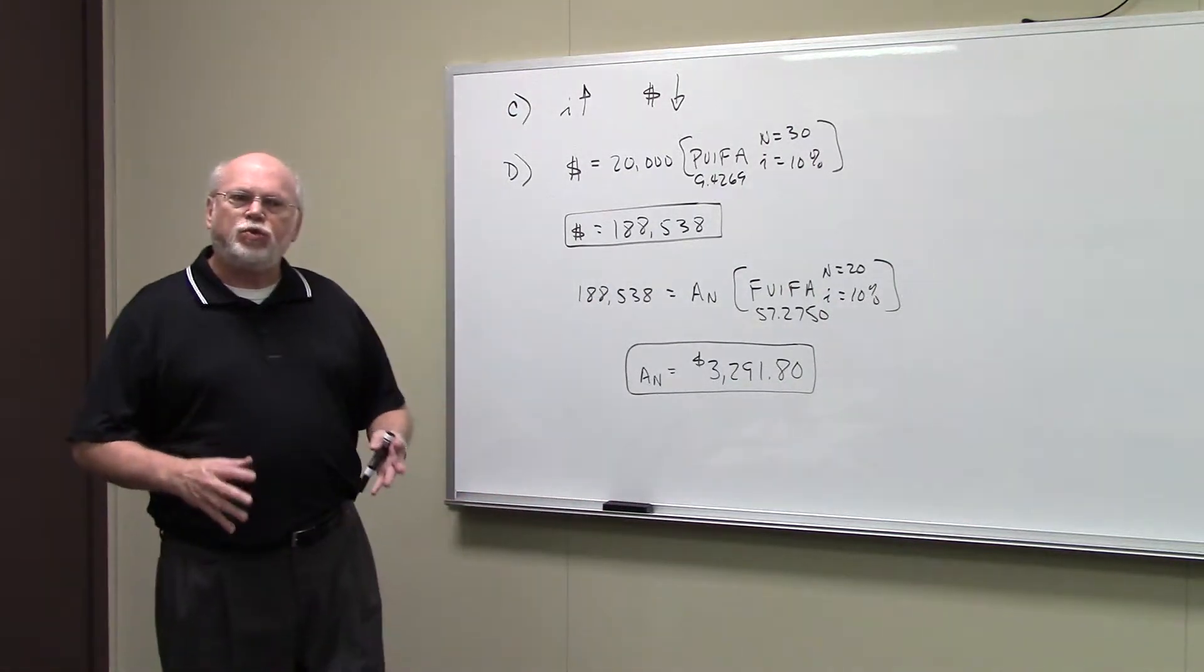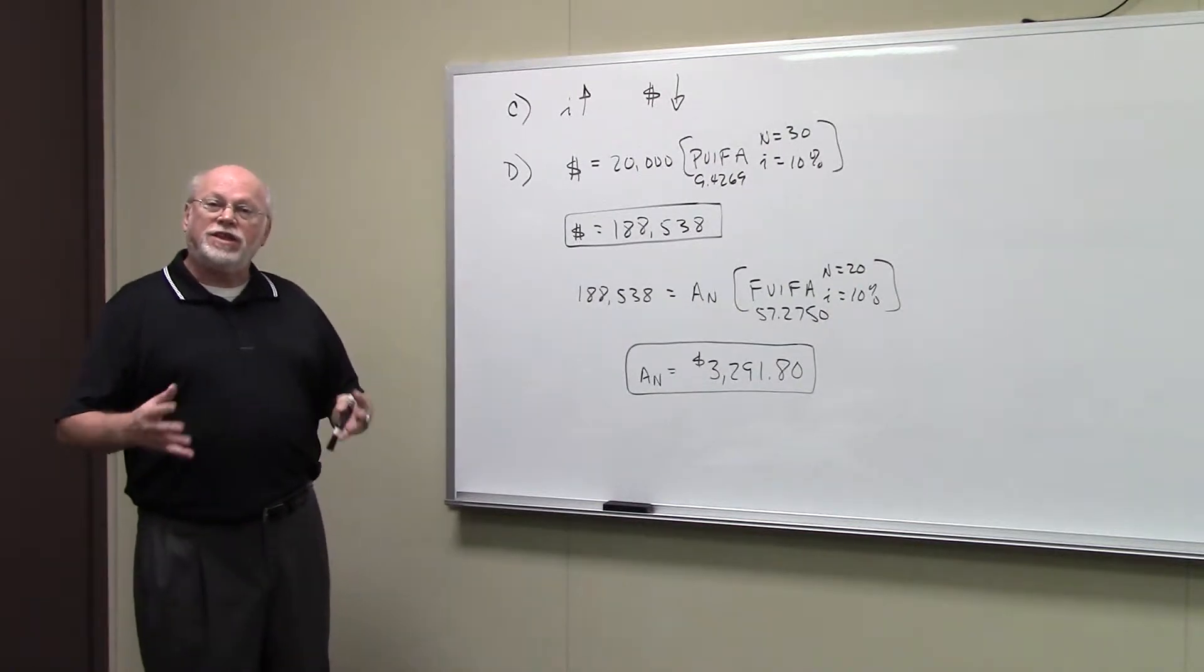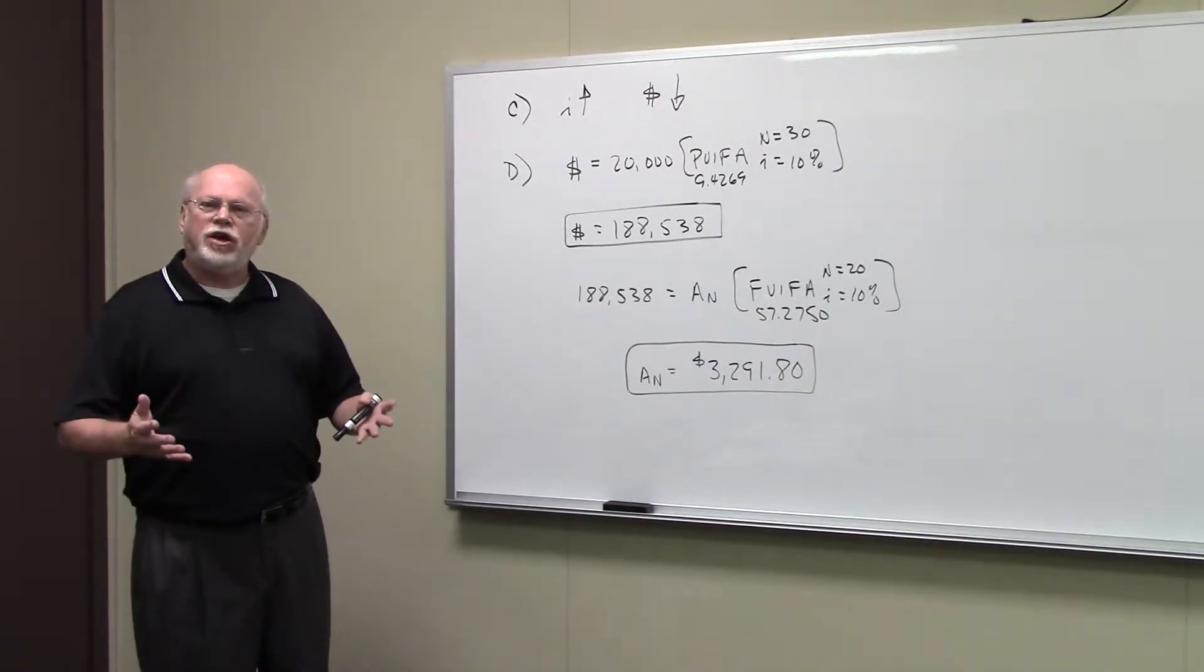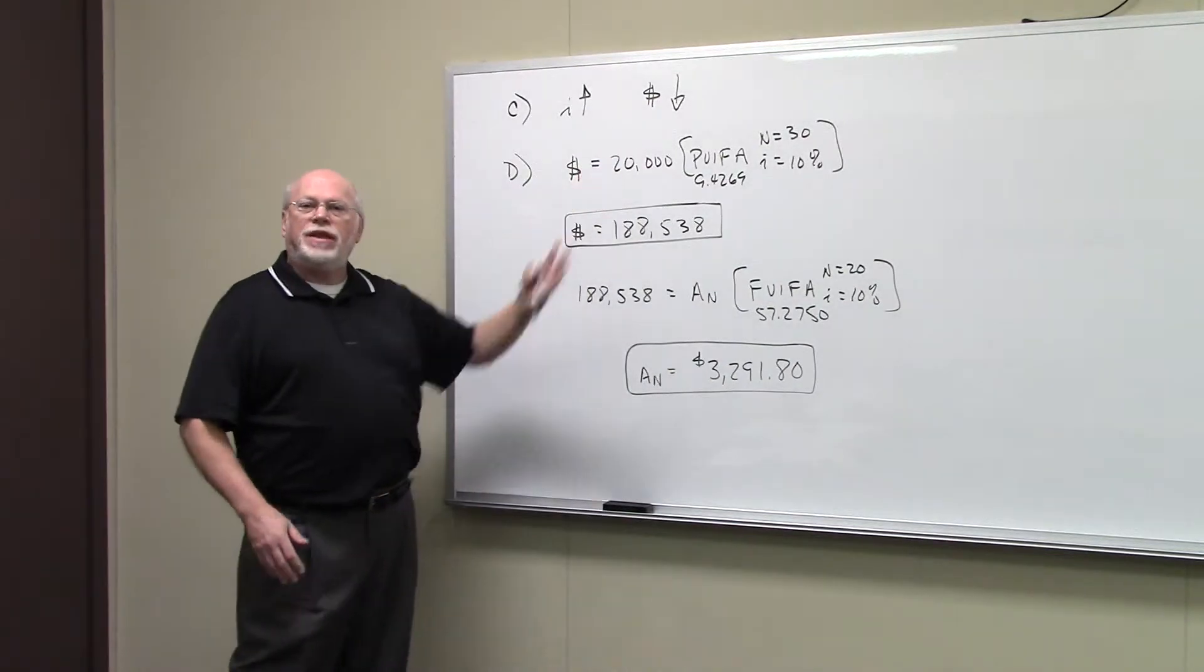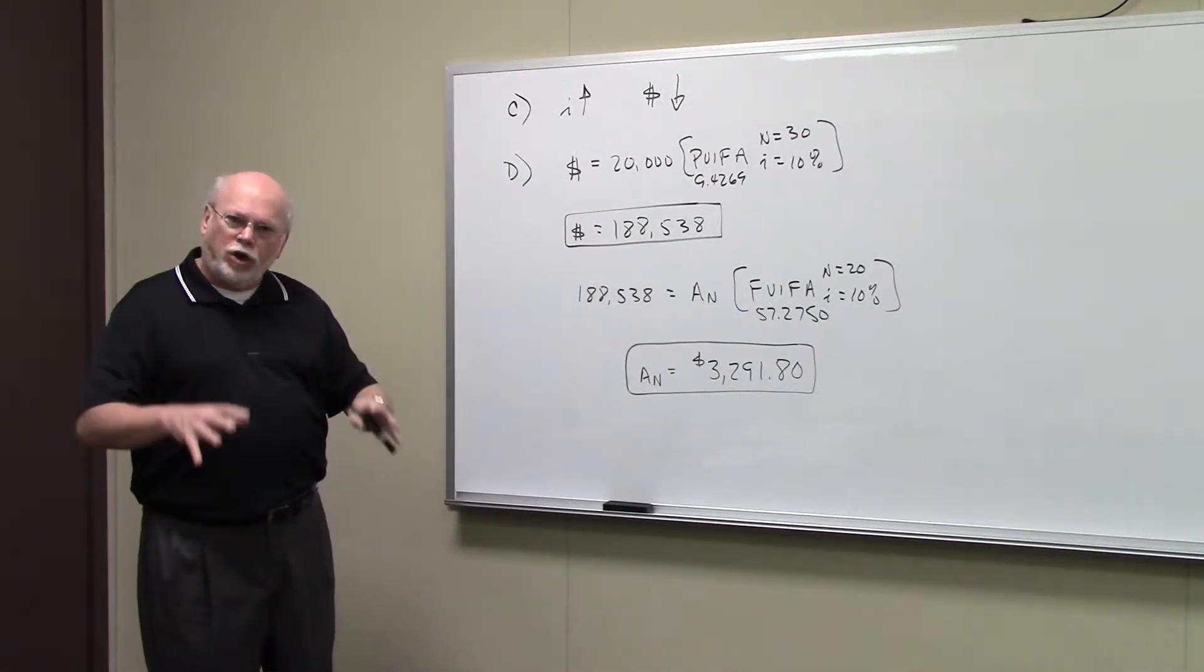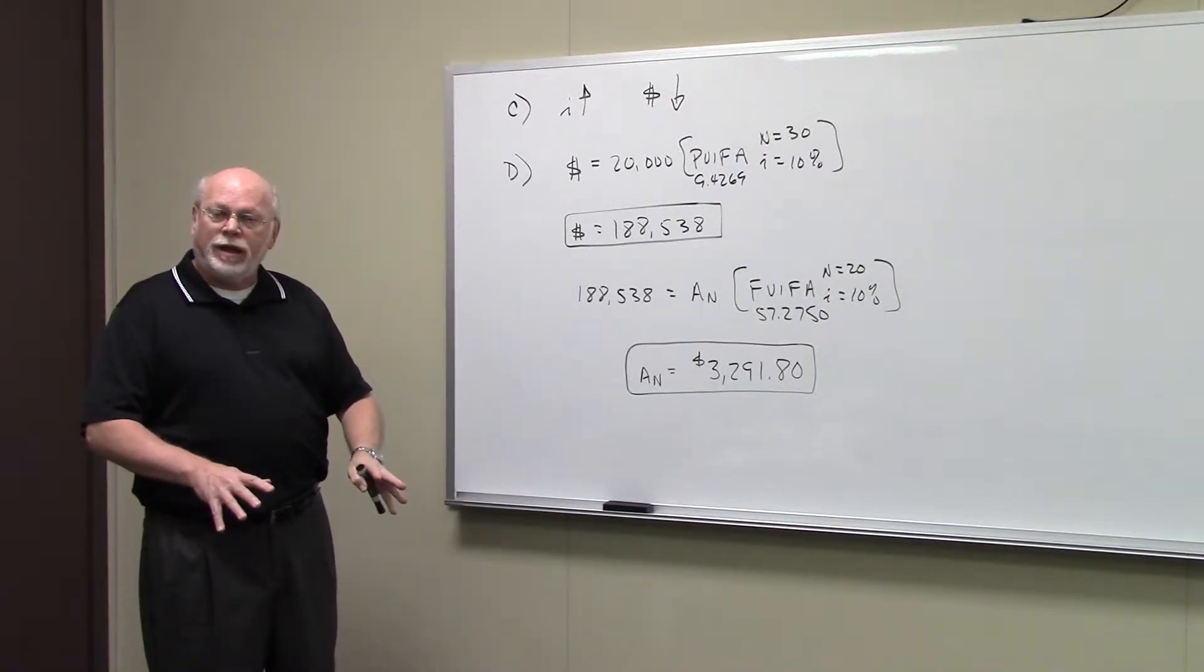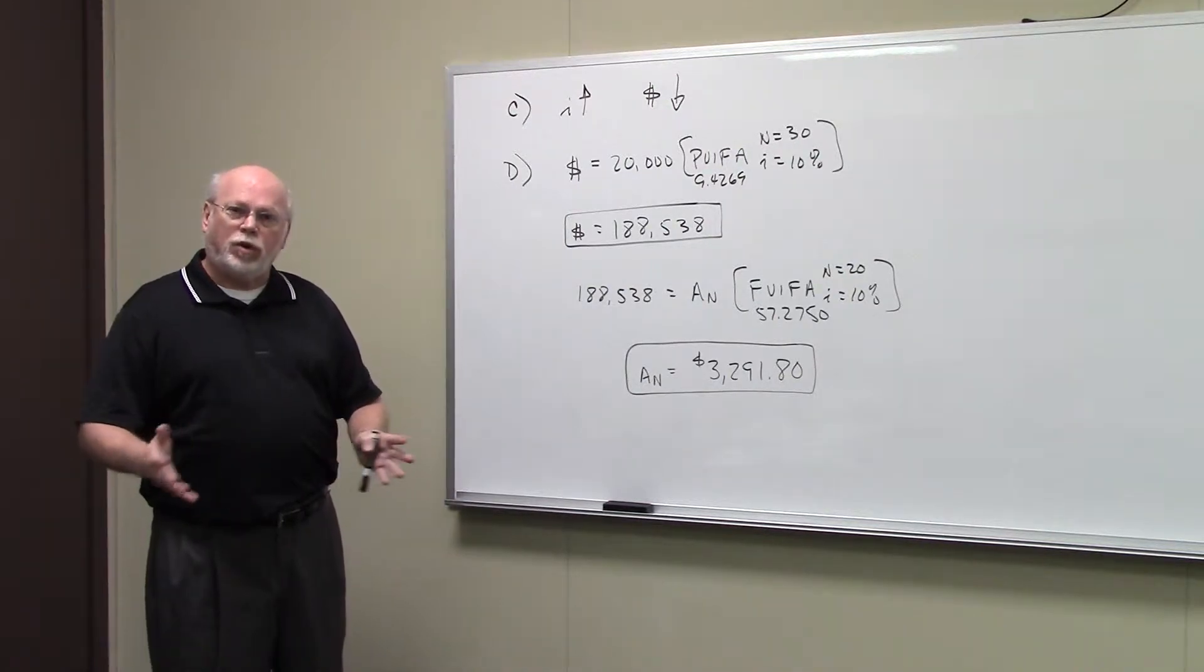In part C of this problem, it asks us what would happen if the reinvestment rate or the discount rate increased, that is they could earn a greater rate of return. Well if they could earn a greater rate of return, then the amount of money that they would have to invest in the retirement plan would go down. You can put in less money if you're earning a greater rate of return. So that's the answer for part C.